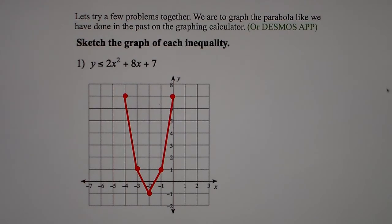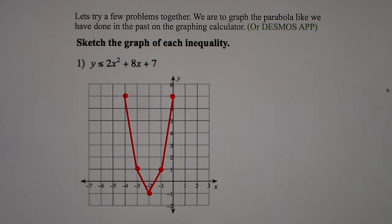Alright, let's do a couple examples. We know what the parabola is going to look like — it's going to have a U shape. You could use your graphing calculator to graph these quadratic inequalities, or you could use the Desmos app — the free Desmos app you can download on your smartphone. There are several different possible ways you could do it.